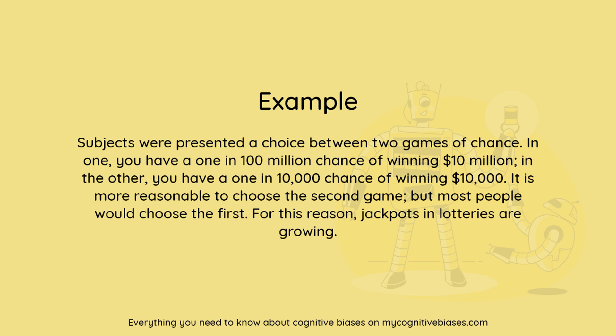Example: subjects were presented a choice between two games of chance. In one, you have a 1 in 100 million chance of winning $10 million; in the other, you have a 1 in 10,000 chance of winning $10,000. It is more reasonable to choose the second game, but most people would choose the first. For this reason, jackpots in lotteries are growing.